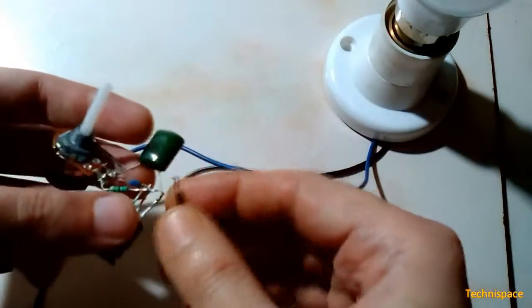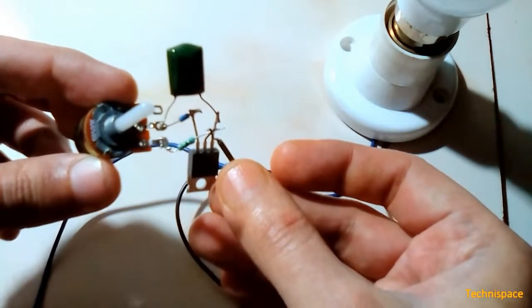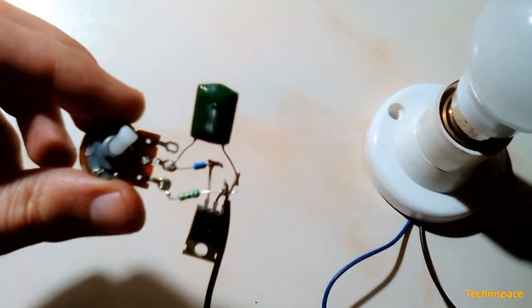Connecting TRIAC's middle pin MT2 terminal to 3 watts LED bulb wire, and after soldering.